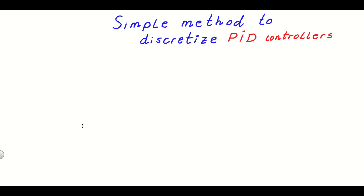Hello, everyone. In this control engineering and control theory tutorial, we will explain one very simple and effective method to discretize PID controllers. So let's start with the motivation. Usually, if you open most textbooks on control theory or control engineering, you will find that PID controllers are first explained either in the continuous time domain or in the Laplace complex domain. For example, a PID controller in the so-called parallel form in continuous time will have this form.